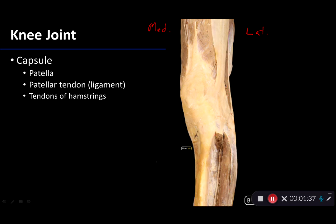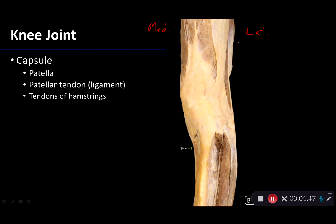Let's talk a little about this particular joint. Like all synovial joints, there is a joint capsule, and that capsule is made up of fibrous connective tissue and other tissues as well.